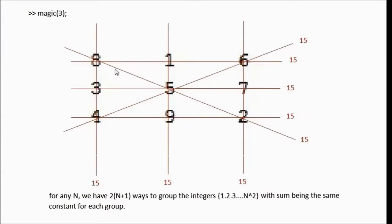For the 3 by 3 matrix, we have 8 ways of grouping the numbers from 1 to 9, with the sum within each group being the same — here, 15. For any n, we have 2n plus 1 ways to group the integers from 1 until n squared, with the sum being the same constant value for each group. Here, for n equal to 3, we have grouped the numbers from 1 until 9 into 8 groups, with the sum of each group being 15.